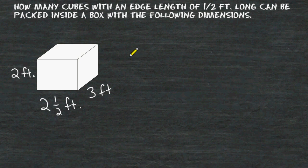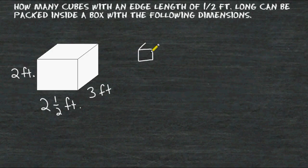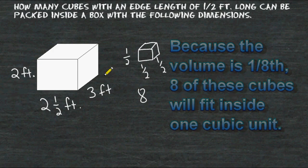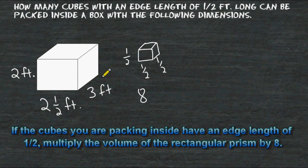One thing to keep in mind when figuring out how many cubes with a fractional edge length you can pack inside a rectangular prism: any time you have a cube with an edge length of one half, it takes exactly eight of these cubes to make one whole cubic unit. So if the edge length is one half, the volume is one eighth. Therefore, we would simply multiply whatever the volume is of the rectangular prism by eight.